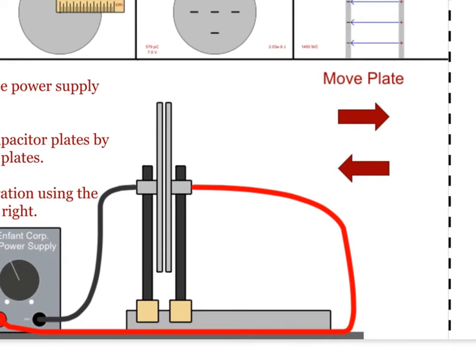Students can move the plates farther apart. When the plates are close together, the movement will be small. As the plates get farther apart, each time they click the arrow it will cause the plates to move a larger and larger distance.